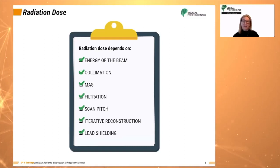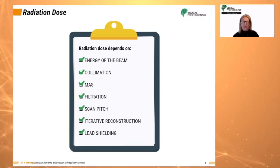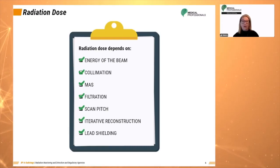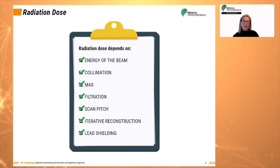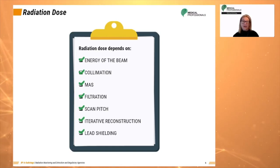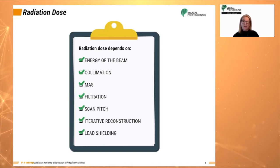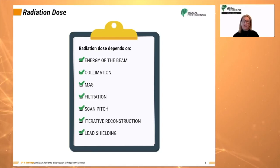Iterative reconstruction can be used to reduce dose levels while maintaining acceptable noise levels. It refers to iterative algorithms used to reconstruct 2D and 3D images. In computed tomography, an image must be reconstructed from projections of an object. Generally, shielding is not utilized in CT because the beam is so tightly collimated to the slice thickness.